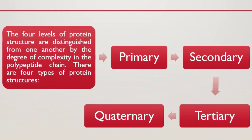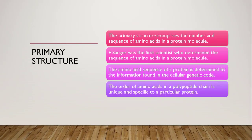Proteins exhibit four types of structures. These are primary structure, secondary structure, tertiary structure, and quaternary structure. These four levels of protein structure are based on the complexity of the polypeptide chain. Now let's see these structures one by one.